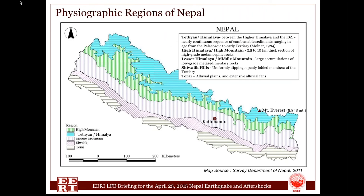Nepal is subdivided into five major physiographic regions: the Tethyan Himalayan belt in the north, then the High Himalayas, Lesser Himalayas, Siwalik hills, and Tarai plains in the south. Each physiographic region is separated from the others by a geological fault system. The Tethyan and High Himalayan region is separated from the Lesser Himalayas by the Main Central Thrust fault system; the Lesser Himalayas and Siwalik hills are separated by the Main Boundary Thrust fault system; and the Siwalik hills and Tarai are separated by the Himalayan Frontal Fault system.